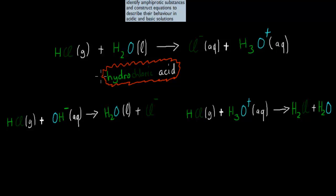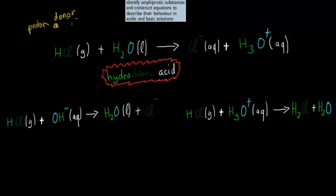I'm going to start this video talking about hydrochloric acid. What I want to show you first is a general equation of hydrochloric acid and water. In the case of hydrochloric acid, it acts as the proton donator — it is the acid. It will donate the hydrogen to the water molecule, and the resulting ion will be a hydronium ion, which makes things more acidic.